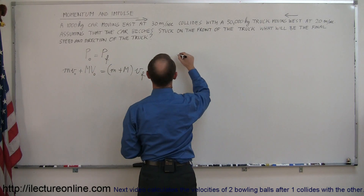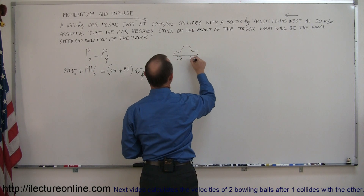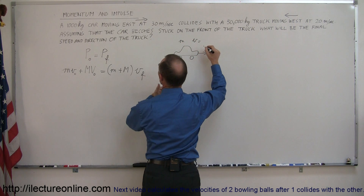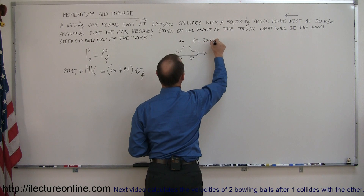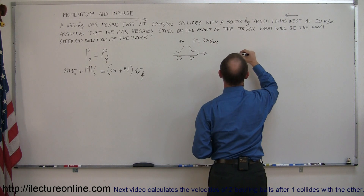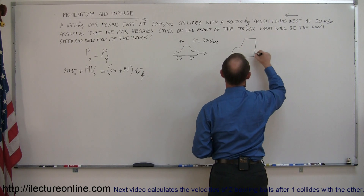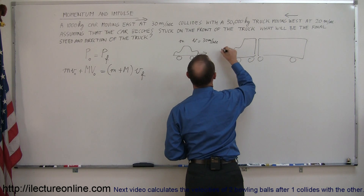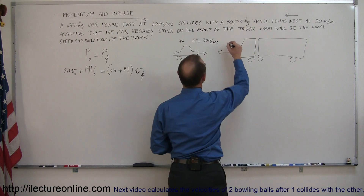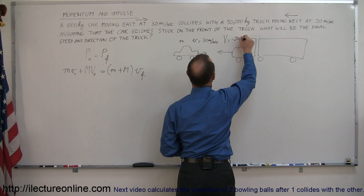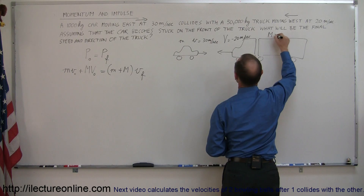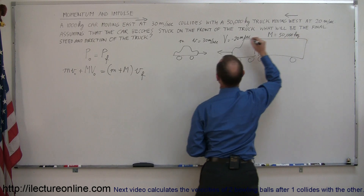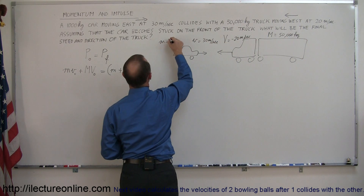We have a car moving to the right with mass m and velocity equal to positive 30 meters per second. Then we have the big truck moving to the left at 20 meters per second, so its velocity is negative 20 meters per second. The truck's big M equals 50,000 kilograms and the car's mass equals 1,000 kilograms.